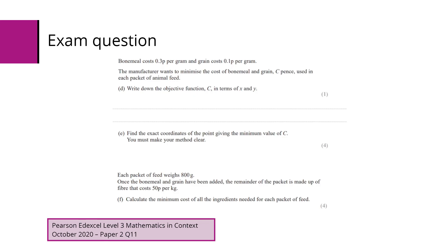Part E, we've then got to find the exact coordinates of the point giving the minimum value of the cost. We've then got that each packet of feed weighs 800 grams. Once the bone meal and grain have been added, the remainder of the packet is made up of fibre that costs 50p per kilogram. We've then got to calculate the minimum cost of all the ingredients needed for the packet of feed.